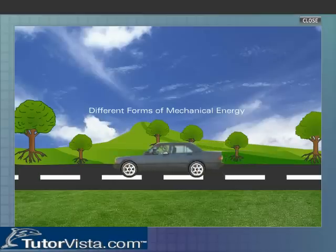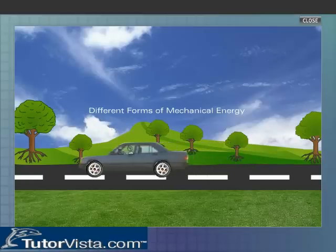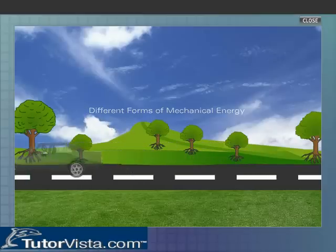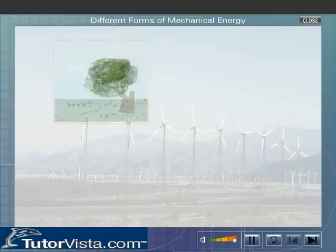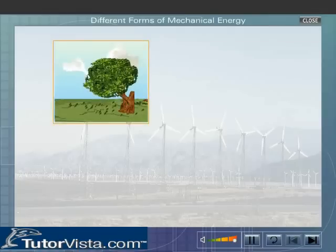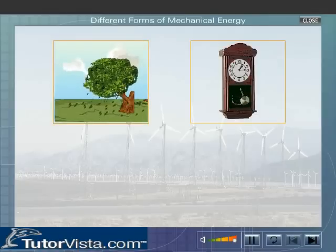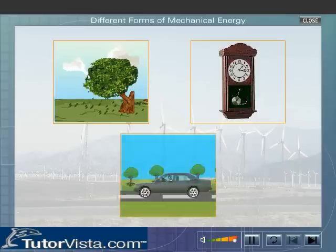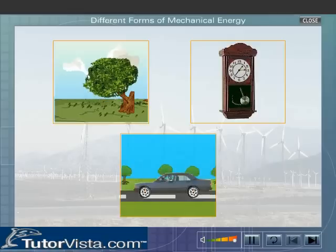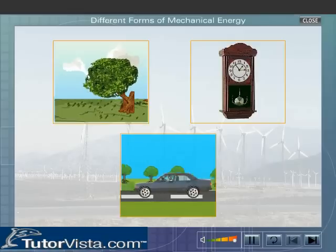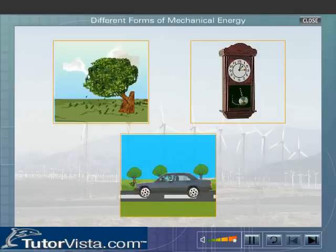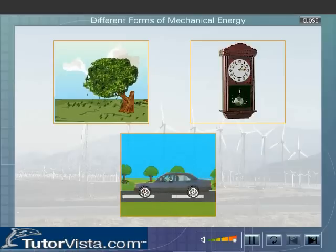Different Forms of Mechanical Energy. Have you ever wondered why the leaves get scattered on a windy day? What makes the hands of a pendulum clock move, and how do automobiles move? All these are possible because the agents responsible for the respective change possess energy. This type of energy which can be used to do work is called Mechanical Energy.